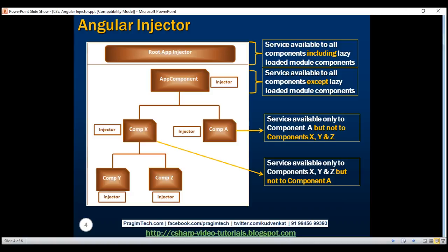Let's understand how these hierarchical injectors work in Angular. Assume we have our service registered with the injector at component x level, and component z needs an instance of that service. First, Angular is going to check its injector: do you have the service registered with you? The answer is no, so that request bubbles up to its parent — in this case, component x. It asks the same question with the injector at that component level. The answer is yes, so this injector is going to inject an instance of that service into component z, and everything works as expected.